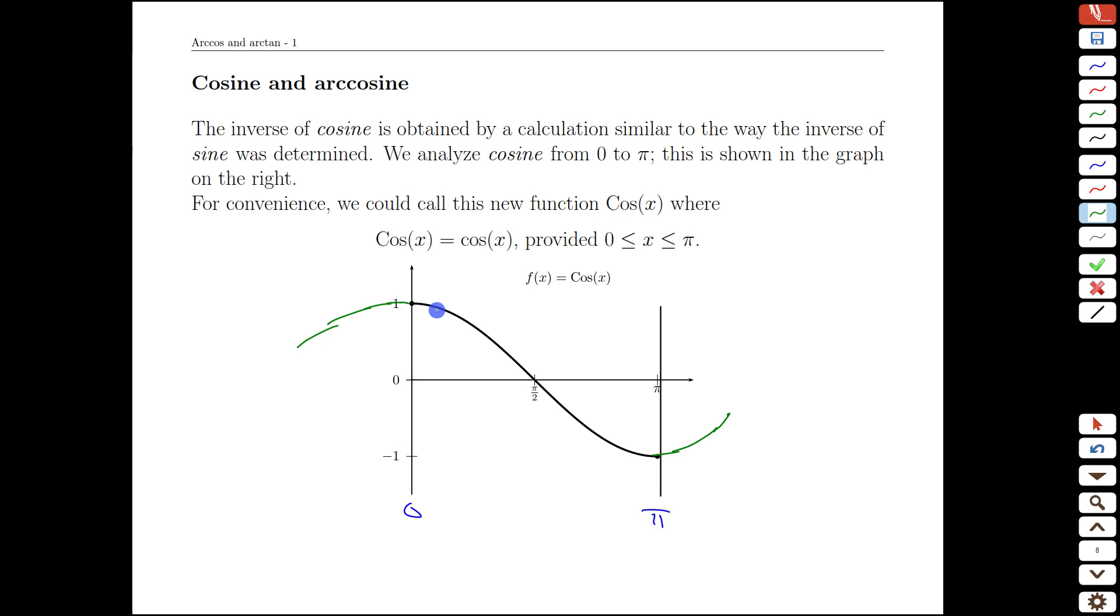And so we define this capital C Cos function, which just limits the domain to that safe interval where we do pass the horizontal line test. We can't go any further because then we start getting duplicate y values again. Can't go any further back for the same reason.